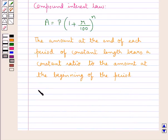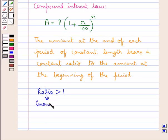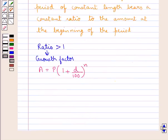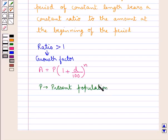If this specific ratio — which is the ratio of the amount at the end of each period to the amount at the beginning of each period — is greater than 1, then this ratio is called the growth factor. In this case the law applied is A is equal to P into 1 plus D upon 100, whole to the power of N, where P is the present population, D is the growth rate, and N is the time.